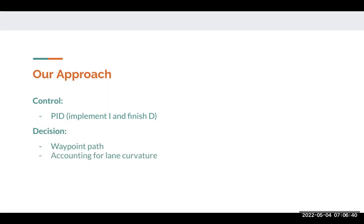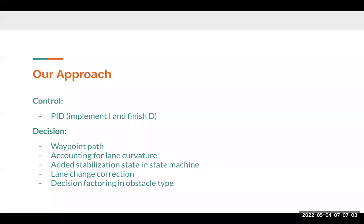As for the decision module, we altered the way that waypoints are generated and created a waypoint path. Also, we accounted for lane curvature and added a stabilization state in our state machine. We also incorporated lane change correction to make sure that the car can successfully turn into the target lane, and we factored in the obstacle type, so a vehicle versus a pedestrian, into our decision making.